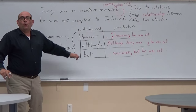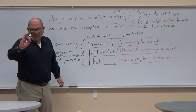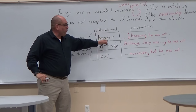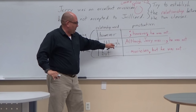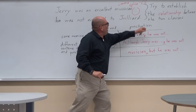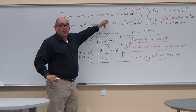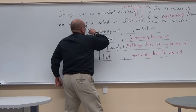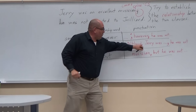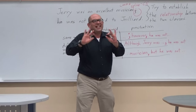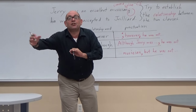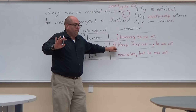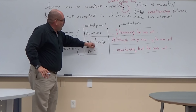We can also use 'although,' which is called a subordinating conjunction — 'however' used this way is a conjunctive adverb. 'Although Jerry was an excellent musician, he was not accepted to Juilliard.' This is correct. 'Although Jerry was an excellent musician' is not independent — you need something else to complete that idea, and the 'although' signals that. So this is another way to fix a comma splice.